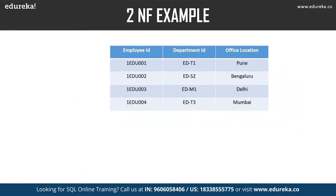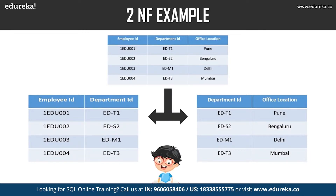To resolve this, we split the table into two parts. The first table has employee ID and department ID as columns. The second has department ID and office location as columns. By doing this, we remove the partial functional dependency. Now office location is fully dependent on the primary key of its table, which is department ID. This achieves second normal form.